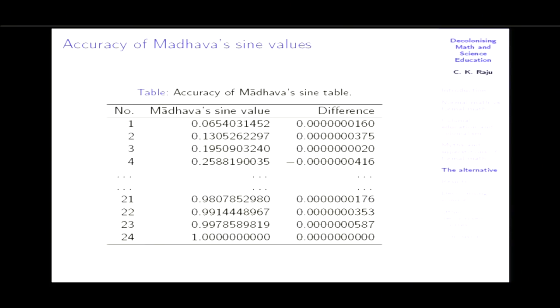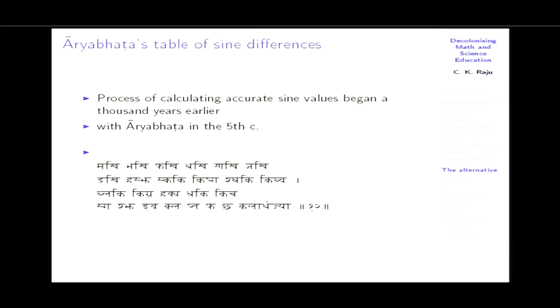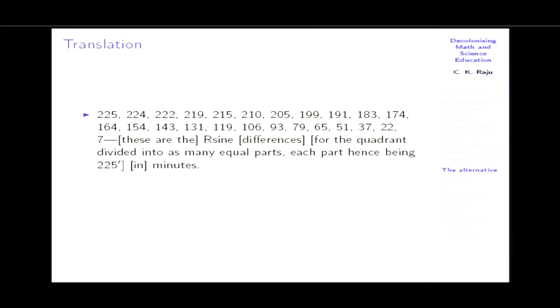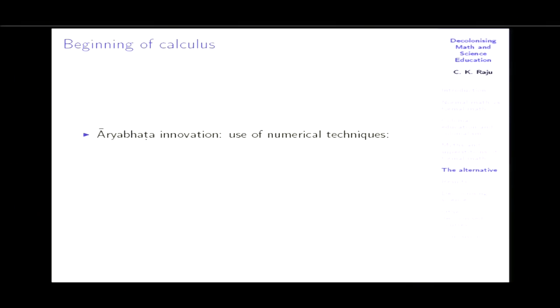Clavius, the chief Jesuit, published these values in his name in 1608. This process started long ago, with Aryabhata in the 5th century, who used numerical techniques rather than geometric ones — what is today called the Euler method. Euler had access to Indian sources and wrote an article on the Indian calendar in 1700. Ramagupta used quadratic interpolation — what is today called Stirling's formula. Vateshhvara in the 9th century used 11th and 12th order interpolation to calculate 96 sine values accurately, and this actually involved infinite series — the so-called Taylor series for sine, cosine, and arc tangent, and the so-called Leibniz series for pi.